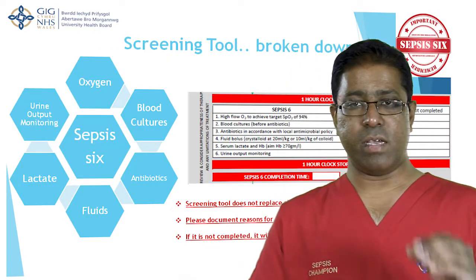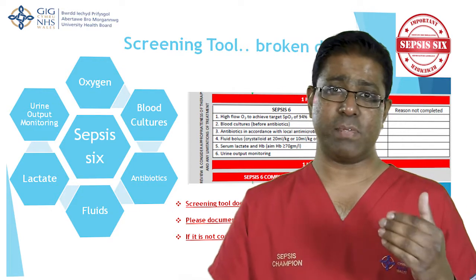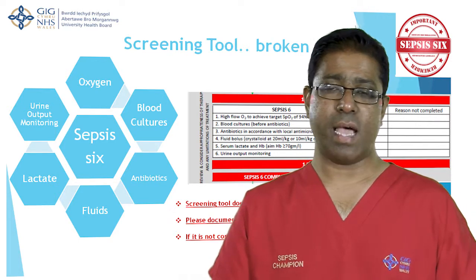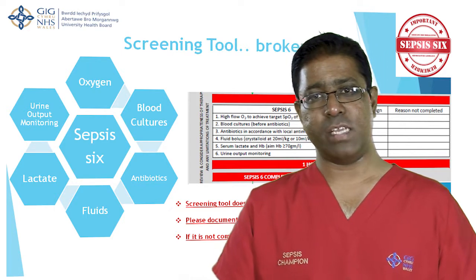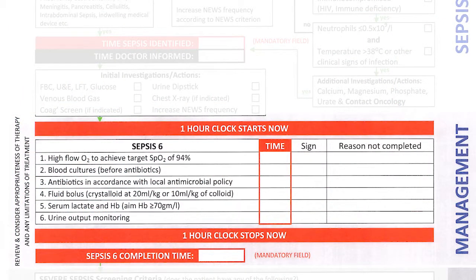Once you've initiated the investigations, look at the patient and assess which elements of Sepsis 6 need to be completed. Sepsis 6 includes: oxygen, blood cultures, antibiotics, lactate and haemoglobin, fluid bolus, and urine input and output monitoring. In some cases nurses may have started some elements. If you think the patient doesn't need antibiotics or cultures, please document this in the comments box, because if any element of Sepsis 6 is not completed, we will consider it hasn't been reviewed. Make sure every Sepsis 6 element box is addressed.